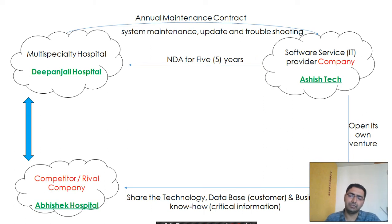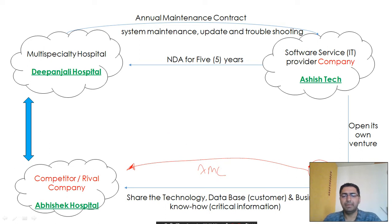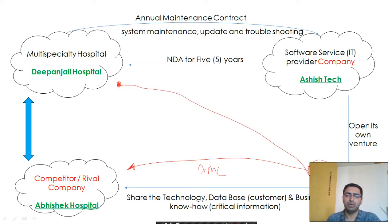Since he worked in the same domain, he also had great experience in the hospitality service industry. He got a similar AMC contract from Abhishek Hospital. During his contract with Abhishek Hospital, New Tech provided know-how and data to Abhishek Hospital — essentially committing a data breach.